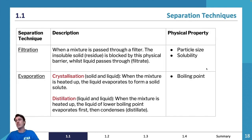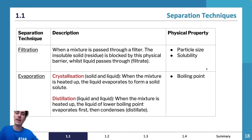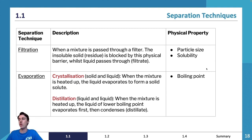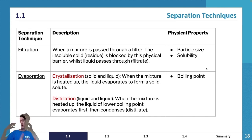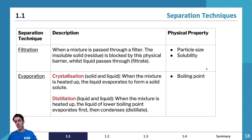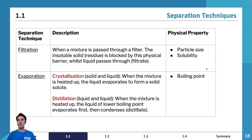Filtration works based on particle size and solubility. Solubility is the ability for something to dissolve into water, and it is a physical property. When a mixture is passed through a filter, the insoluble solid is blocked by the physical barrier while the liquid passes through. Think of it like a coffee filter — you pour your mixture through and separate solids from liquids.